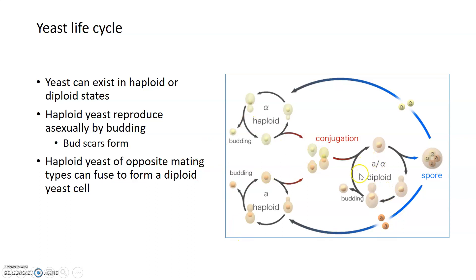Yeast can also reproduce in a diploid form. If you have a haploid yeast of mating type alpha and a haploid yeast of mating type A, these two come together and fuse to form a diploid yeast cell, which can also reproduce by budding. Diploid yeast can reform the haploid state by forming ascospores, which are haploid and can re-enter the haploid life cycle.